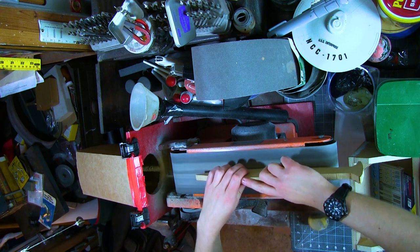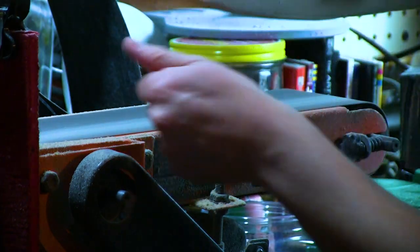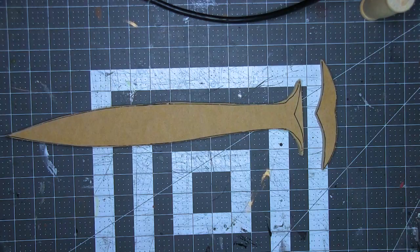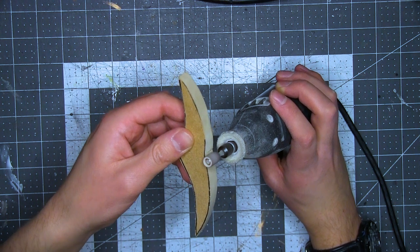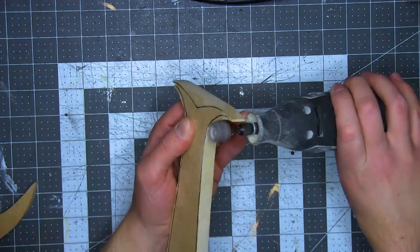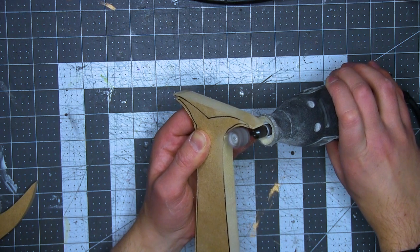MDF dust will get everywhere, so be sure to vacuum after the fact. The belt sander can be overkill in places, so after a while, I switched to the rotary tool, which is a little bit slower, but it offers more control. If you're new to prop making, a rotary tool can be a much less expensive starter tool than a belt sander would be.